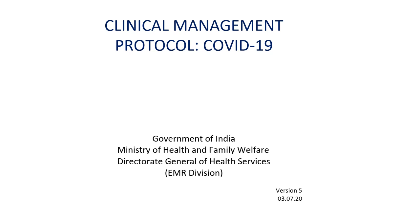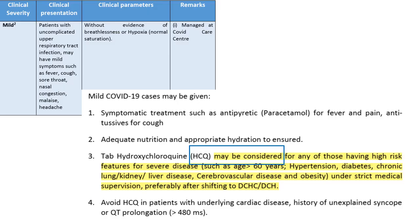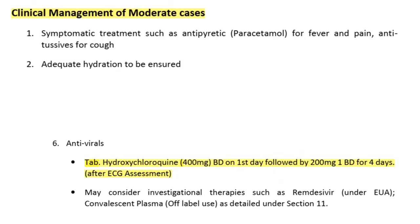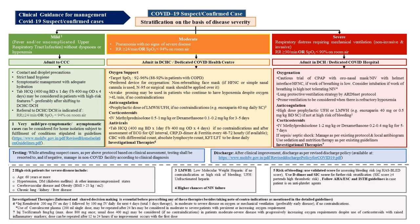In the latest version 5, released on 3rd July 2020, ICMR recommended HCQ in the following scenarios. Scenario one: in mild COVID-19 disease, HCQ may be considered in those having high risk factors. Mild means patients with uncomplicated upper respiratory tract infection without evidence of hypoxia or breathlessness. The second scenario where HCQ is suggested is moderate cases. The dose is 400 mg twice daily on day one, followed by 200 mg twice daily for four days. In mild disease, HCQ may be considered; in moderate disease, HCQ is suggested.